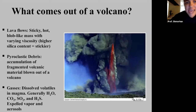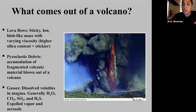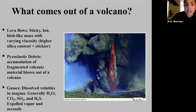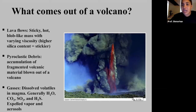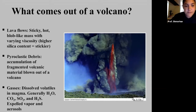So what comes out of a volcano? There are three main things: obviously the lava itself, which we'll talk about in more detail in just a bit; pyroclastic debris, which are fragmented volcanic materials that can accumulate and get blasted out of the volcano during eruption — these fragmented volcanic materials usually originate from the volcano vent itself; and then we also have gases.